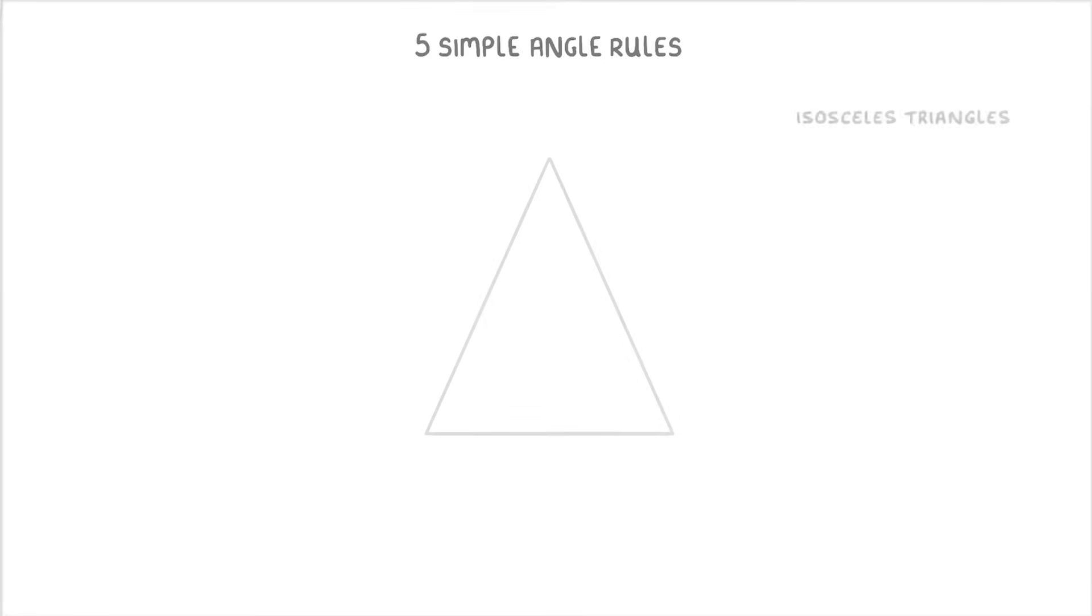The last rule we need to cover is for isosceles triangles. It isn't really one of the angle rules, but it comes up a lot in exams, so it's worth covering. Hopefully you remember that what makes isosceles triangles special is that two of their sides are the same length, which we show with these little dashes. And importantly, this means that these two angles at the bottom will always be the same size.